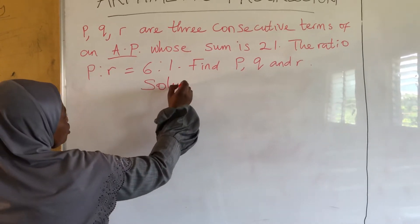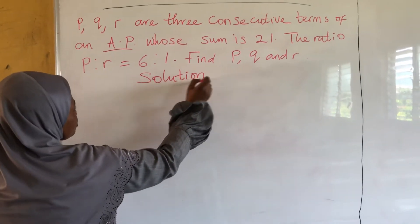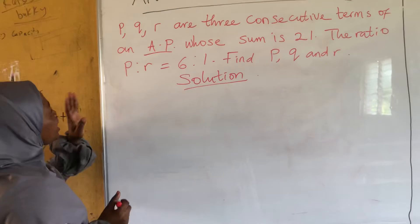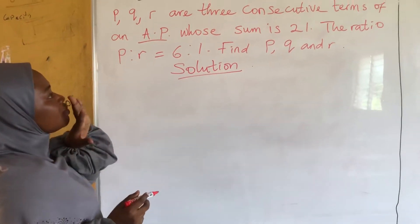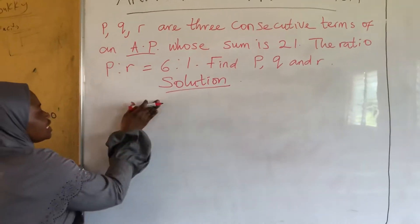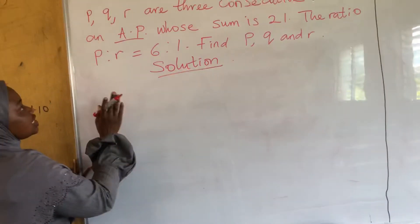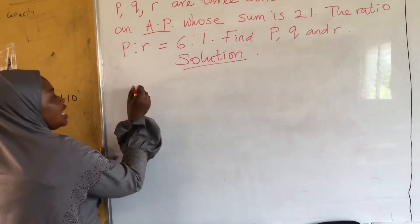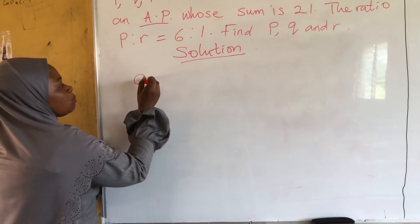Solution. Don't be scared, it's not difficult. So, P, Q, R are three consecutive terms. In the last video, we did four consecutive terms. And we said it is advisable for us to pick like this: A minus D comma A comma A plus D for three consecutive terms.